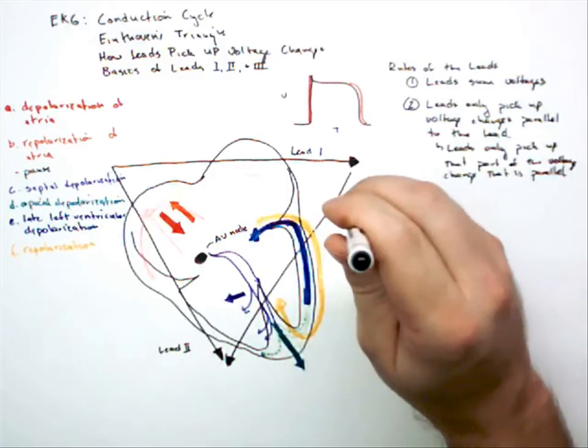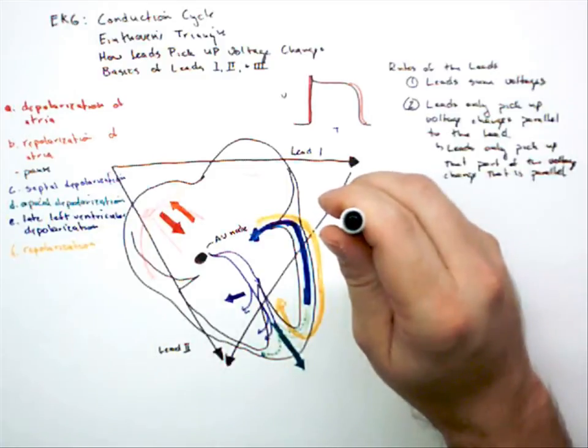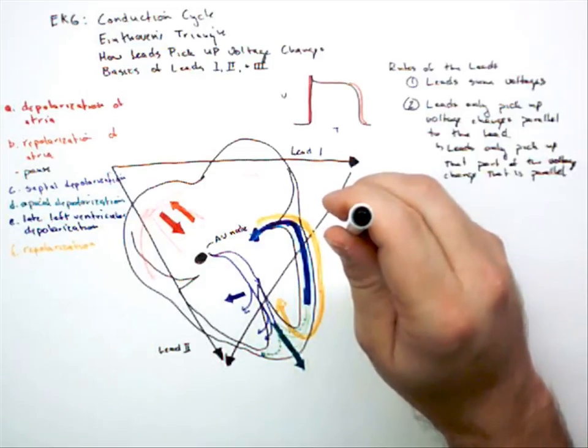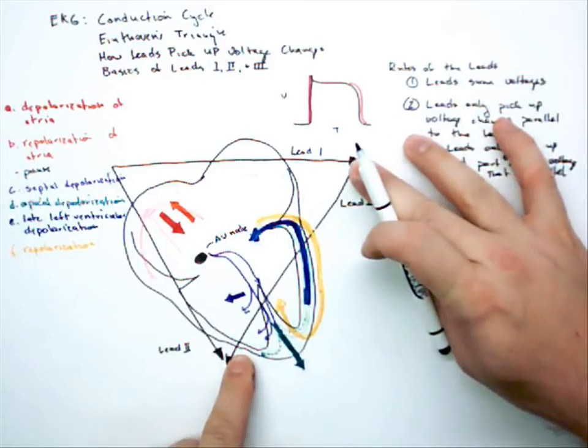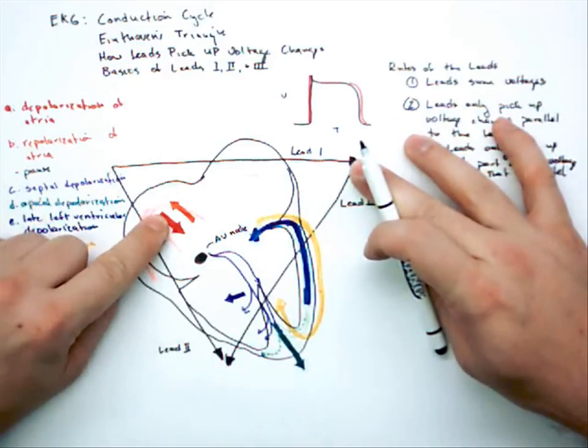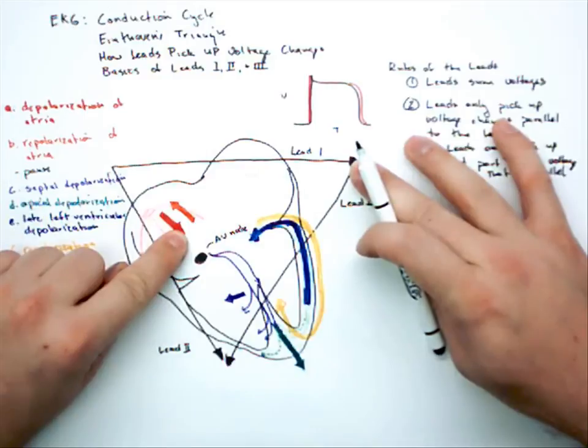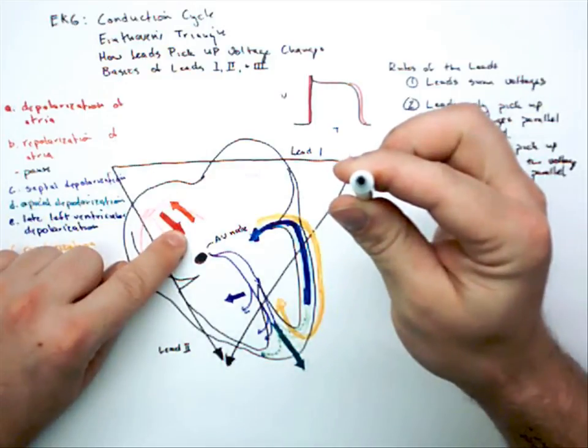But if I turn it this way and I ask you to tell me how long this pen is, you can't tell. It's kind of the same thing with the lead. If we're at lead three and we're looking at this voltage change, this voltage change is heading in this direction. It would be as if you were trying to figure out how long this pen is by looking at it this direction.